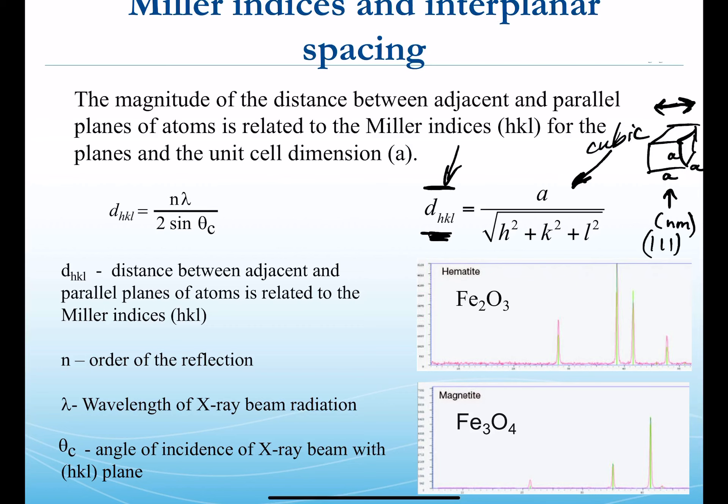We saw that in Bragg's law we had n lambda equals 2 d_hkl sine theta. We now have more understanding for d, so we could input that here and actually express Bragg's law in terms of a unit cell value a and its hkl values. Some questions may demand that strategy.